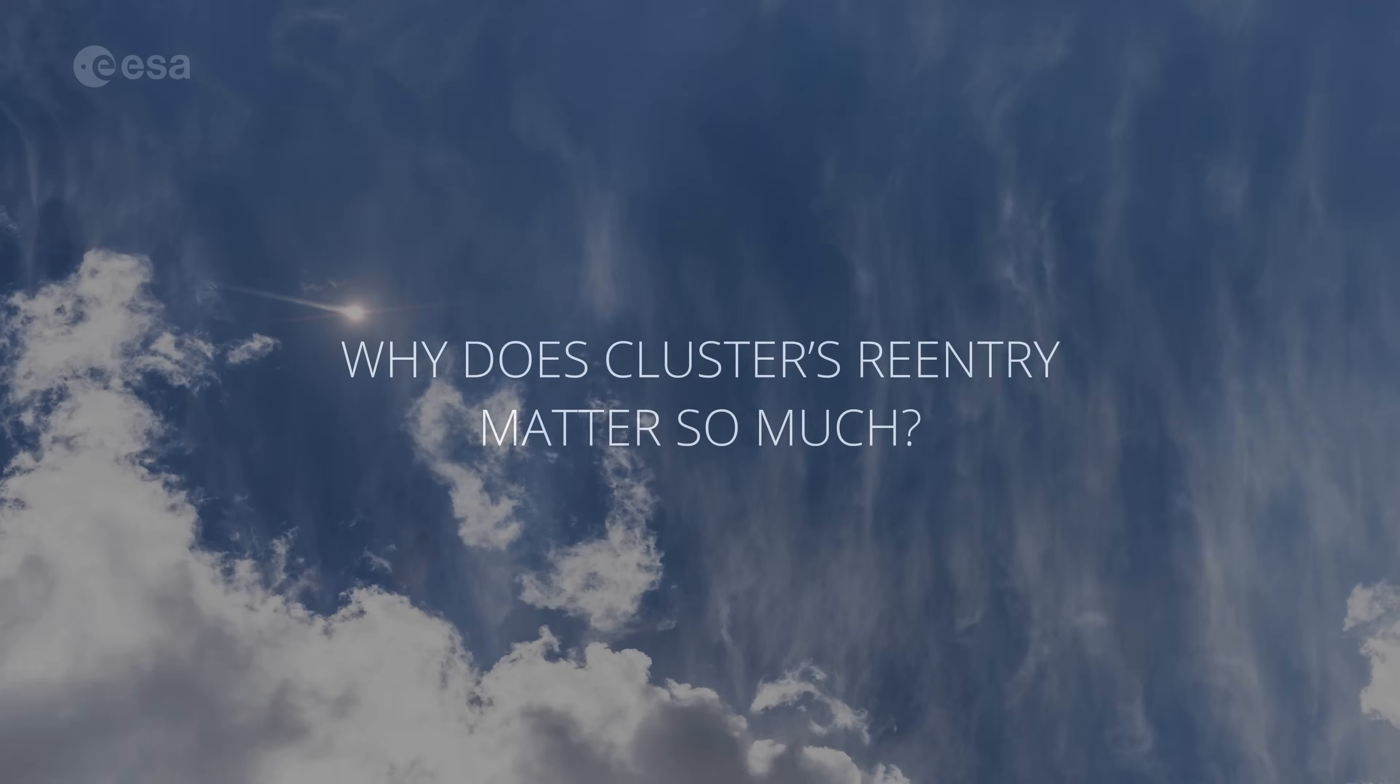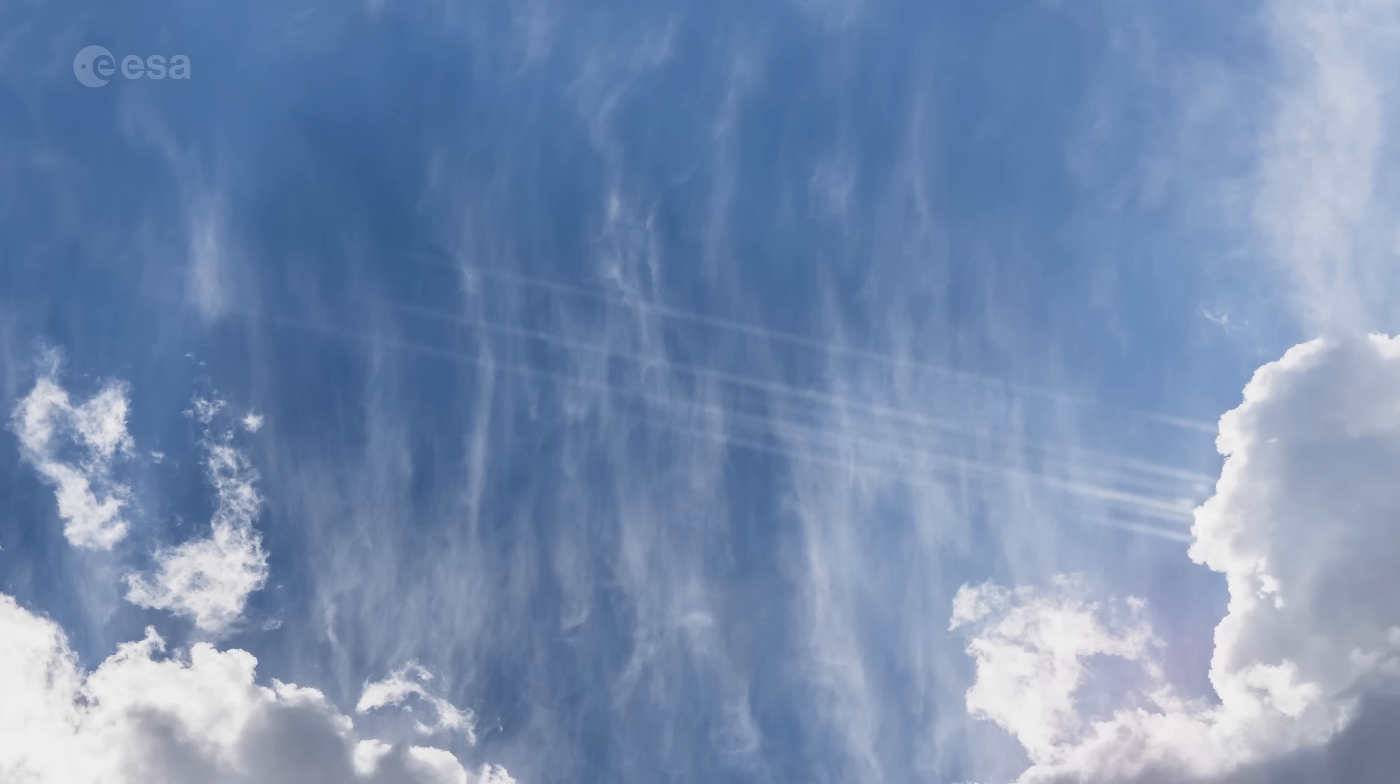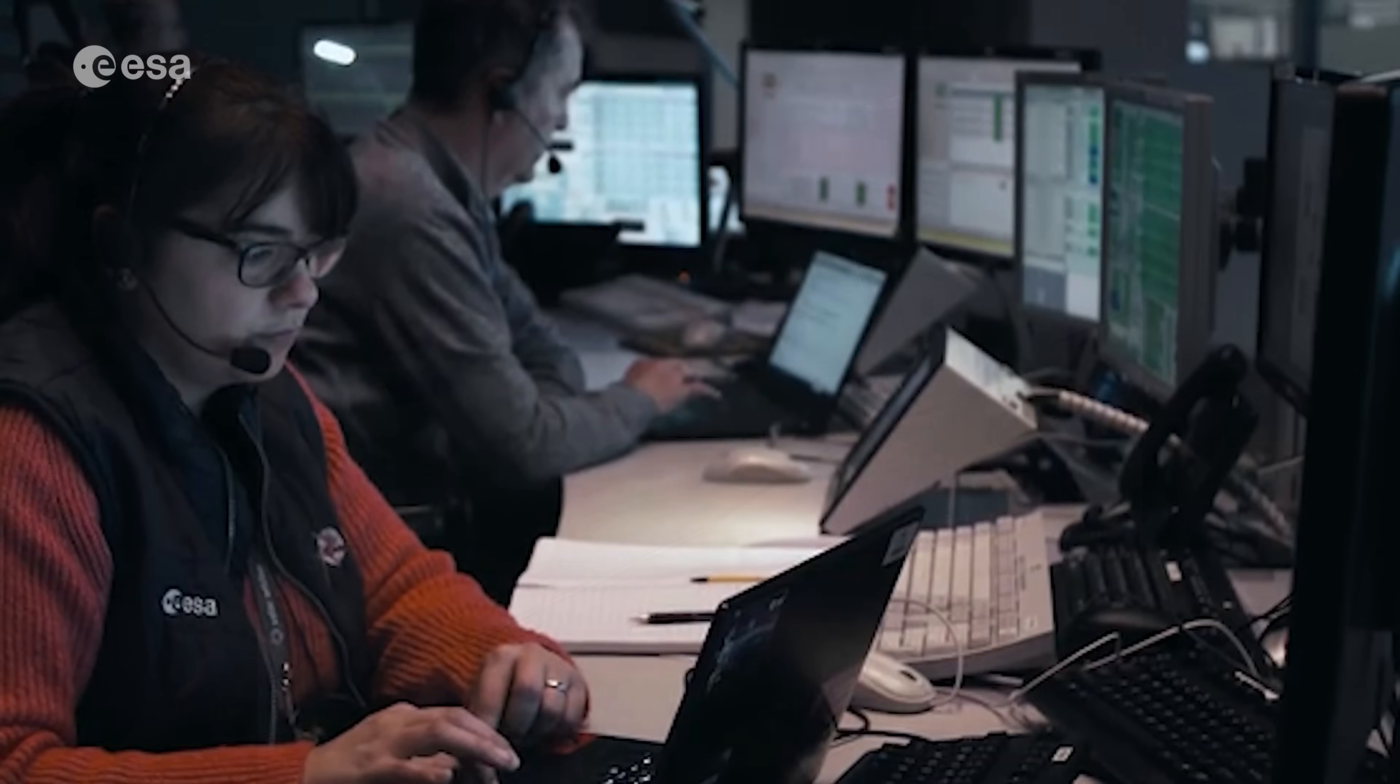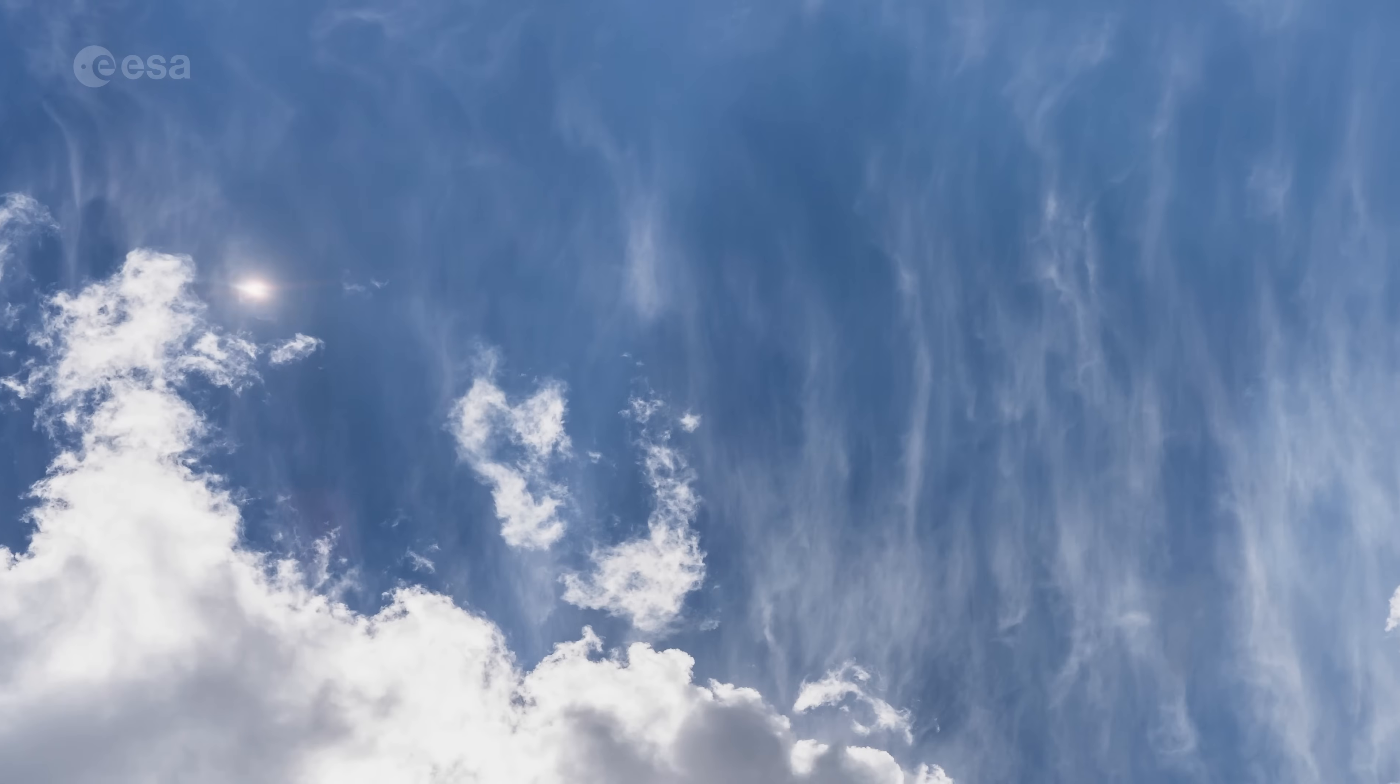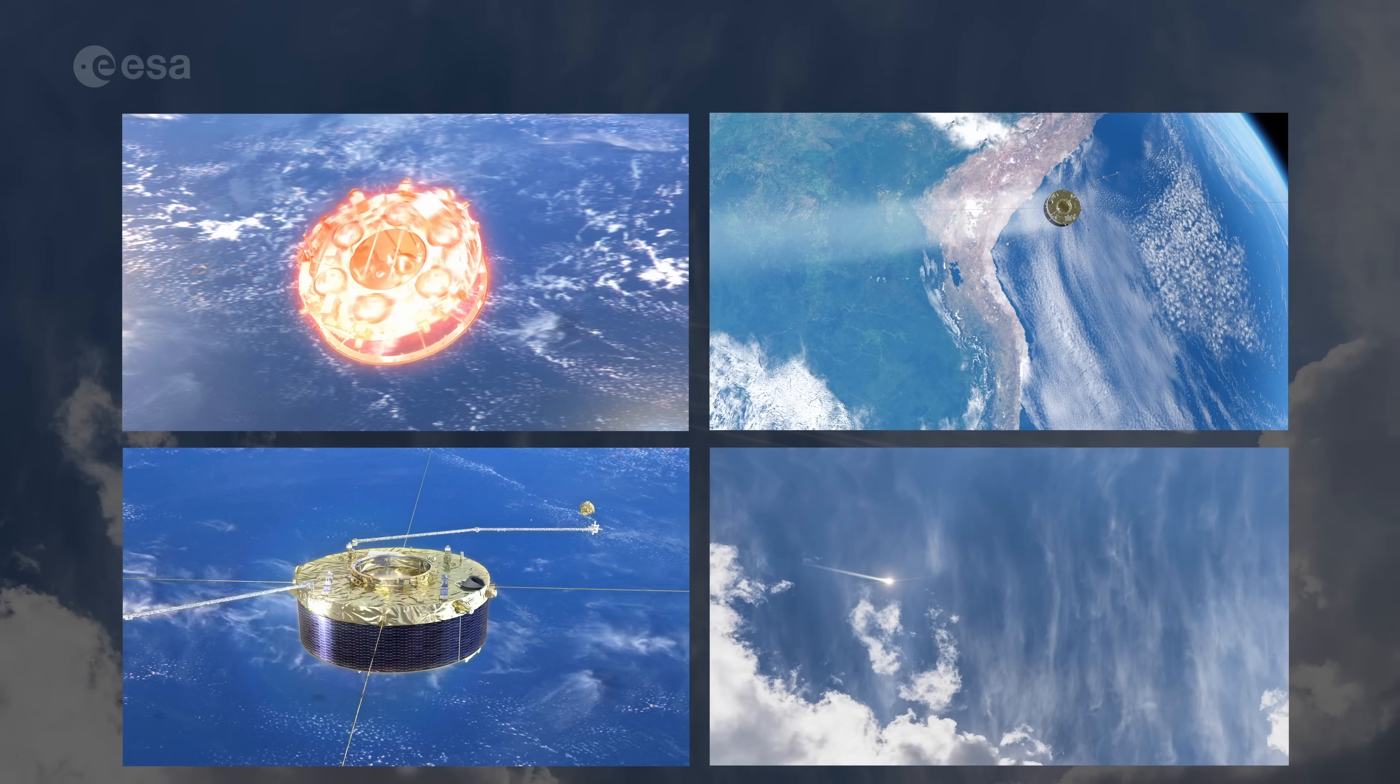But why does cluster's re-entry matter so much? For us, it's a chance to study re-entries under controlled conditions, something that has rarely been done before. Cluster's re-entry is also special because it consists of four identical satellites. Therefore, we have four opportunities to collect valuable data by safely re-entering the same satellite under slightly different circumstances. We can observe what difference it makes as they re-enter at four different angles and speeds, and under four different sets of atmospheric conditions.